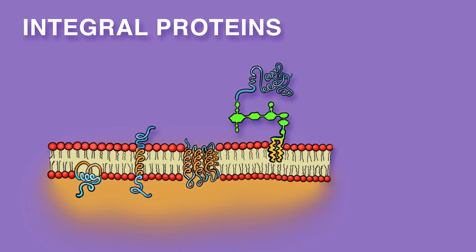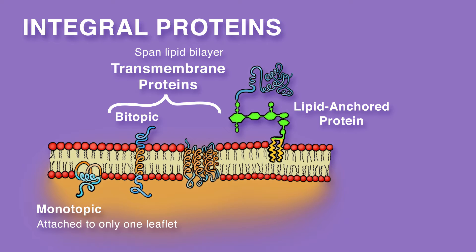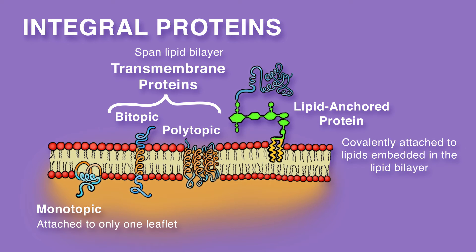There are several different kinds of integral proteins. Integral monotopic proteins are attached to only one of the two leaflets of phospholipids making up the membrane, and they don't span across it. There are also transmembrane proteins and lipid-anchored proteins. Transmembrane proteins span the lipid bilayer, and can be bitopic, spanning across the membrane once, or polytopic, spanning across it more than once.